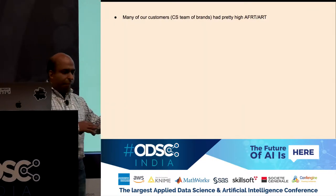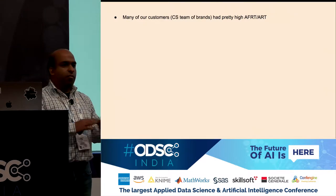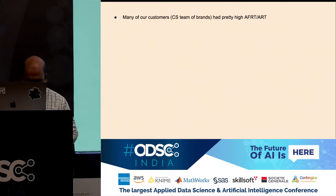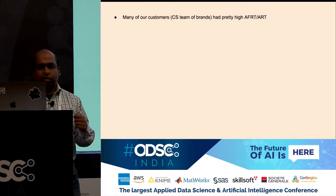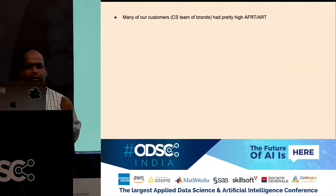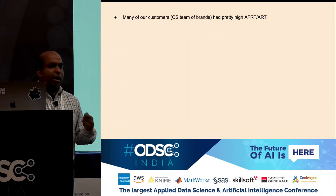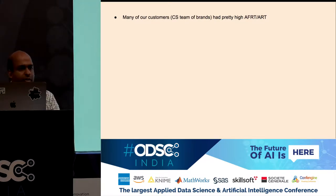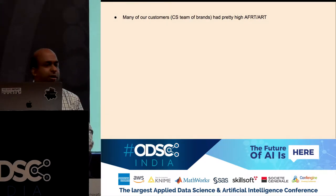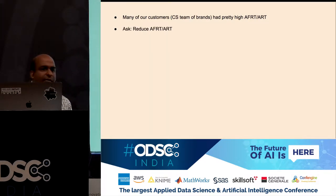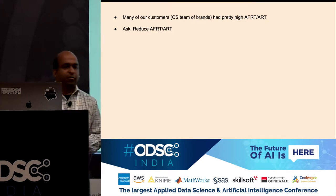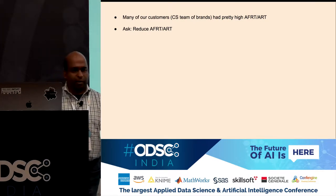I was part of two CRMs — Airboot and Freshworks — and our product is used by brands to talk to their customers. Some time back, many customers came back saying their average first response time and average response time were consistently high. Despite purchasing our product, setting up processes, and training their teams, they couldn't bring these numbers into a reasonable range. They asked: can we help from a product perspective to reduce these two metrics?